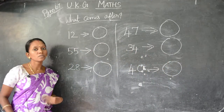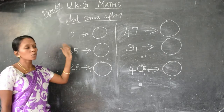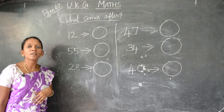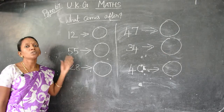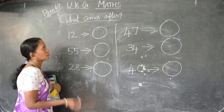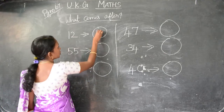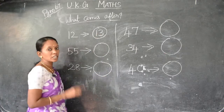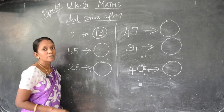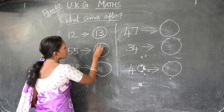See children, the first number — what is it? 12. After 12, what will come? 13. Write it in your book. Next number, 55. After 55, what will come? 56. After 28, 29. Next, after 47 is 48.